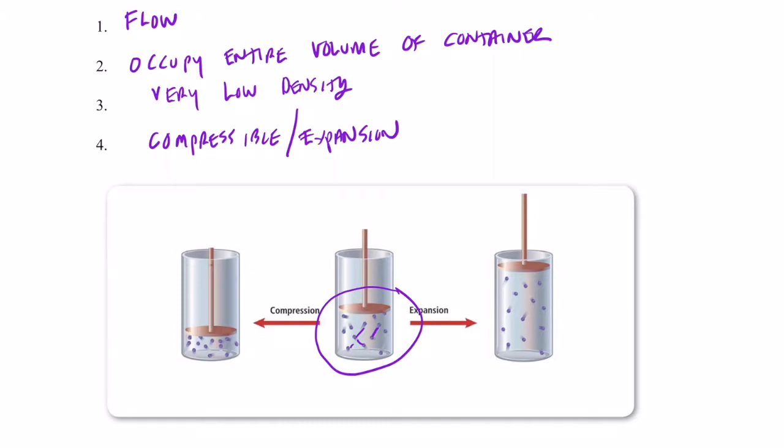Because there's such a big distance between them, we can push that piston down, decreasing the volume of the container. And as a result, the average distance between particles will become closer. We call that compression. If we move that piston up, decreasing the pressure, the distance between the particles, the individual particles, becomes much greater. And that's called expansion.